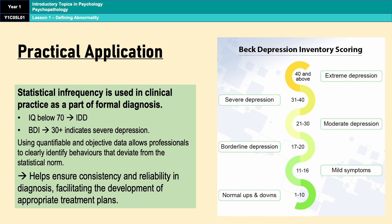For example, a high score on Beck's Depression Inventory — a very well-known and widely used depression questionnaire — such as 30 or above, is statistically infrequent compared to the general population and indicates severe depression. Equally, an IQ of below 70 is required for a diagnosis of intellectual disability disorder. In both cases, statistical infrequency is very useful for diagnosing and assessing. Using quantifiable and objective data in this way allows professionals to clearly identify behaviours that deviate from the statistical norm, and it helps maintain consistency and reliability in diagnosis procedures, which in turn facilitates the development of appropriate treatment plans.